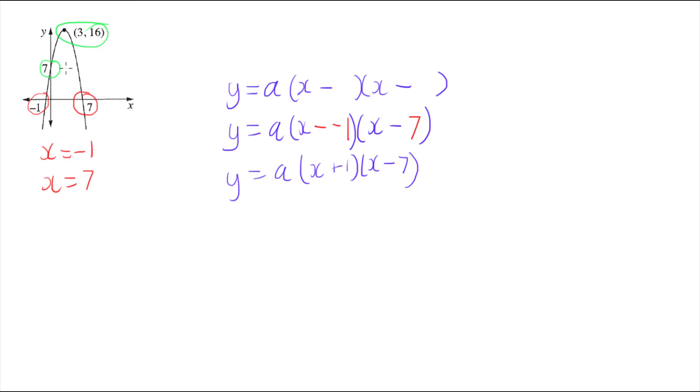And I can pick either of those points because I'm going to substitute those in for x and y, and that will leave only a unknown. And the reason I can do that is because these points satisfy the equation, which means they will work as valid x and y solutions.